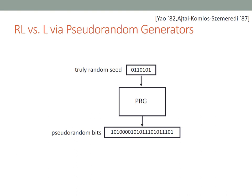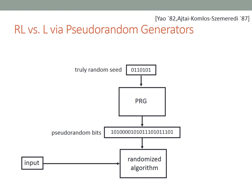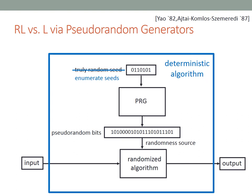The way that you use a pseudorandom generator to try to derandomize an algorithm is as follows. You have your randomized algorithm; instead of giving it truly random bits, we give it pseudorandom bits from a pseudorandom generator. If the pseudorandom generator is good, meaning it doesn't hurt the success probability, we still have a randomized algorithm with good success probability that uses fewer random bits. We can then convert it to a fully deterministic algorithm by trying every possible seed, since the seed is so short.